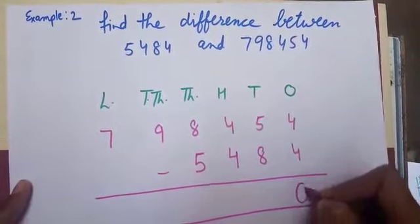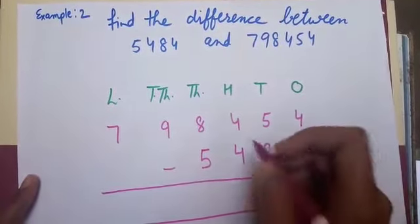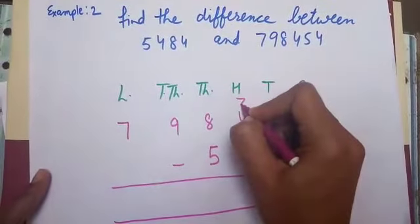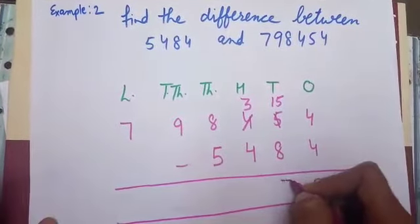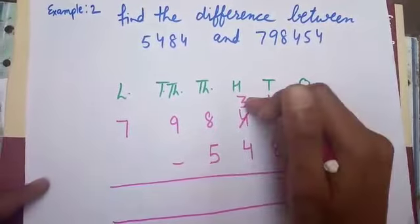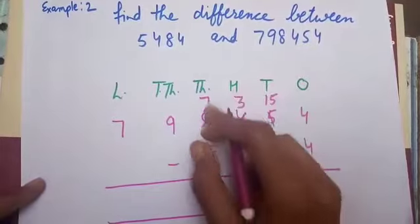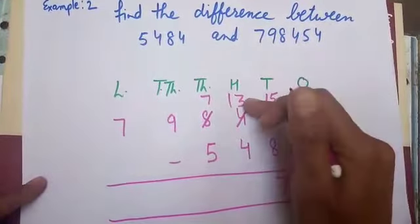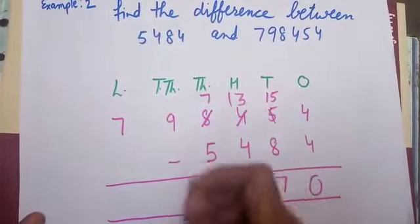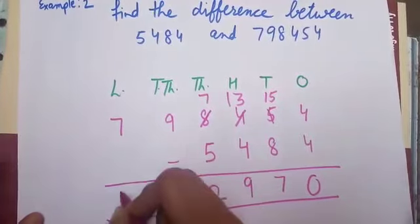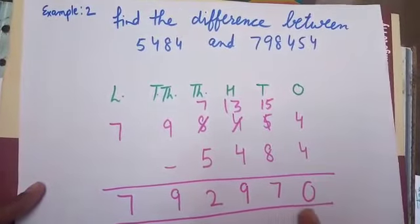4 minus 4, 0. 5 minus 8. But 5 is smaller than 8. So I borrow from 4. So I borrow from 8. Then this 8 becomes 7 and this 3 becomes 13. 13 minus 4, 9. 7 minus 5, 2. Then 9 as it is. 7 as it is. Then the answer is 7,92,970.